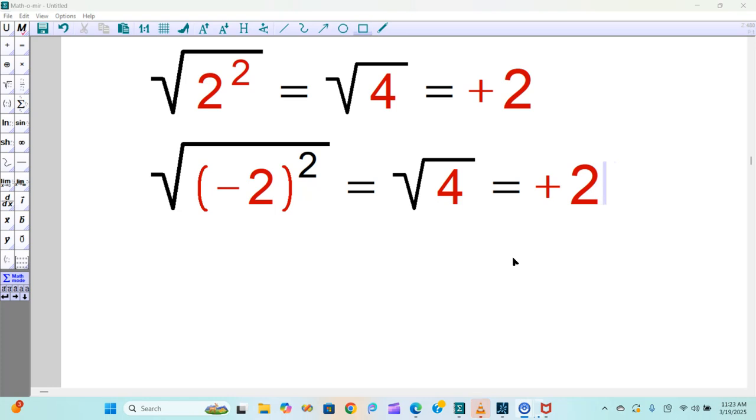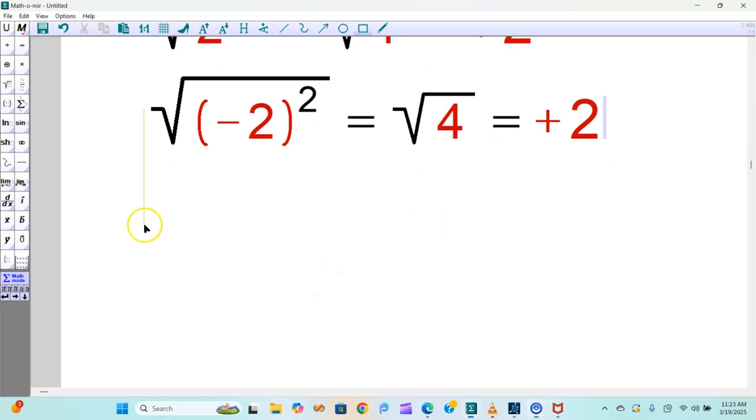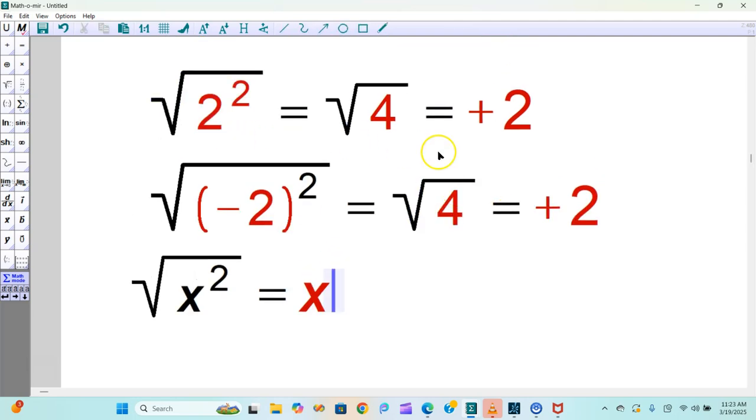Okay, so with that in place, take a look. What happens if you have variables present? I meant to put that over here. So if I have the root of x squared, you might say, well, this is always just equal to x, but clearly, as these examples show, it's not true.